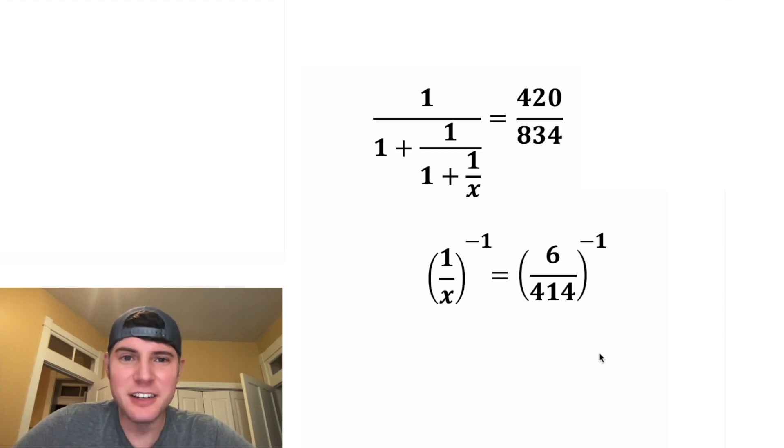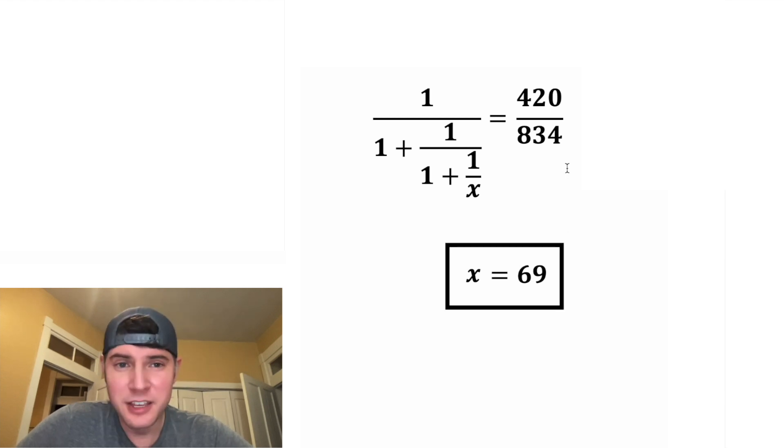Smush this over, do both sides to the negative one exponent. Flip both of the fractions. Drop the parentheses. X over one is equal to X. And 414 over six is equal to 69. Smush them together, put a box around it, and we are done. In this rational equation, X is equal to 69.